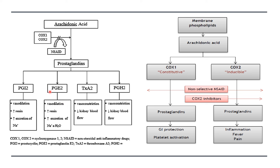Among the prostaglandins, prostaglandin E2 is a potent vasodilator. NSAIDs block this cyclooxygenase pathway — non-selective NSAIDs block both COX-1 and COX-2, while selective NSAIDs block only COX-2. By blocking this pathway, NSAIDs reduce the synthesis of prostaglandins.